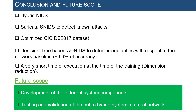In this work, we proposed a hybrid network intrusion detection system based on both signature-based IDS for the detection of known attacks and anomaly detection-based IDS for the detection of irregularities with respect to the baseline. The baseline was elaborated using the decision tree algorithm with an accuracy of 99.9%. Pre-processing performed on the CICIDS 2017 dataset improved detection accuracy with a very short training time. We expect to complete all system components and test the entire system in a real computer network. Thank you.